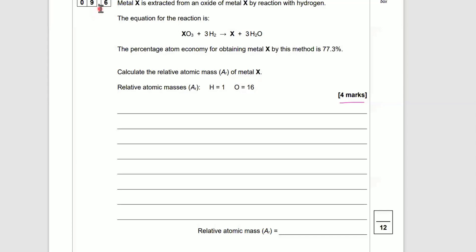Okay, let's get into a really difficult atom economy question. This is 9.6: Metal X is extracted from an oxide of metal X by reaction with hydrogen. I've got a cold so I might sound a bit sniffly. The equation for the reaction is XO3 plus 3H2 goes to X plus 3H2O.